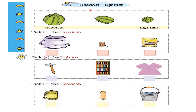Here we are going to compare the heaviest and lightest things. This watermelon seems to be the heaviest and this watermelon seems to be the lightest. An important thing to understand: when comparing heaviest and lightest, the comparison should be between similar objects. Here we are comparing all watermelons only — we are not mixing a watermelon with a water bottle.